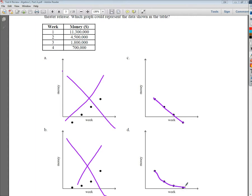You'll notice that C is a linear graph, so it has a line, which would mean that the change each week should be the same. So if I take $11,300,000 and subtract $4,500,000, I should get the same as I would if I did $4,500,000 from $1,800,000. This gives me $6,800,000. That's a big drop. And in the next one it would be $2,700,000, and it finally drops to $1,100,000.